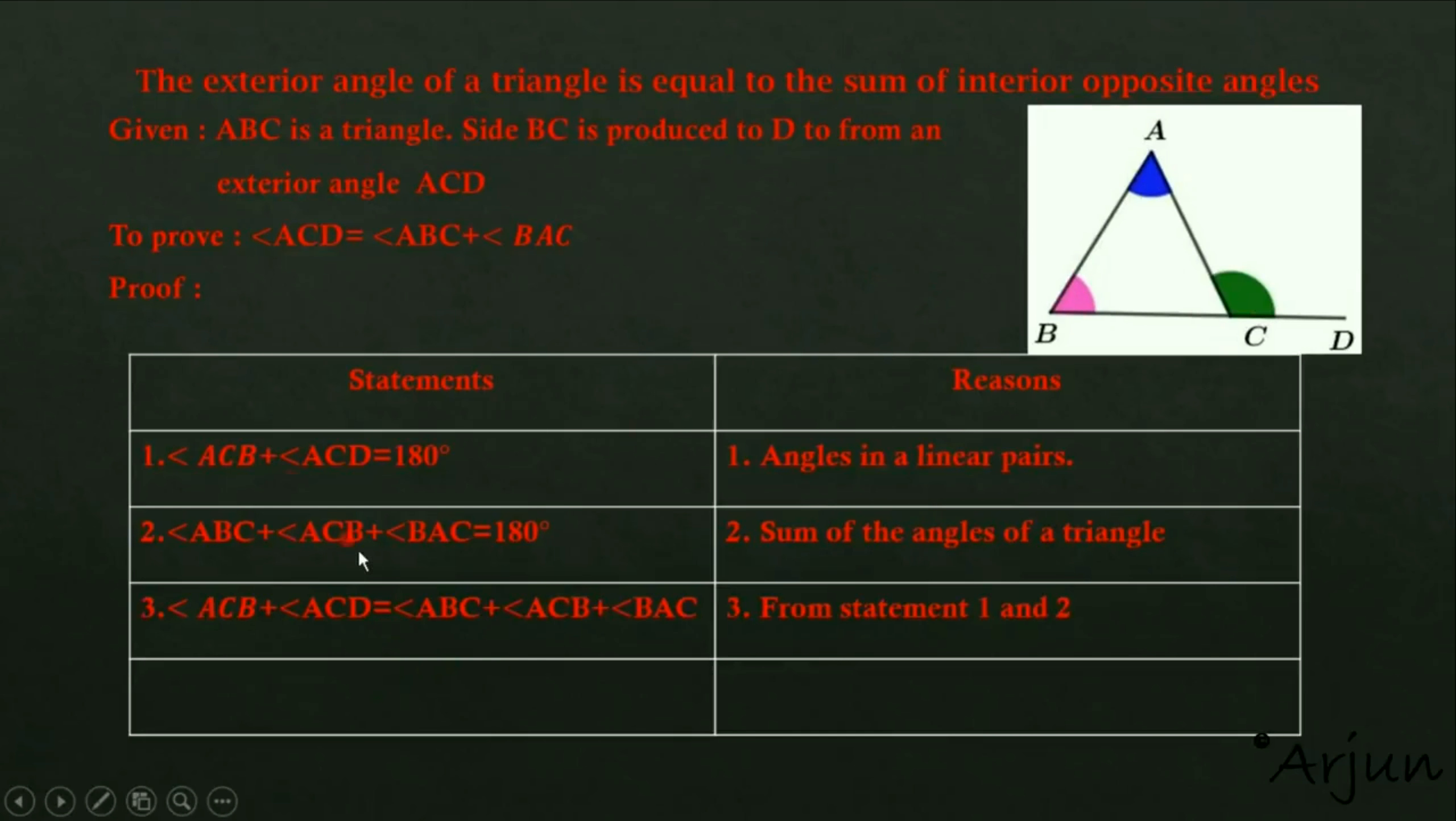Look here. First, angle ACB plus ACD equals 180 degrees. And angle ABC plus ACB plus BAC equals 180 degrees. Therefore, angle ACB plus angle ACD equals angle ABC plus angle ACB plus angle BAC. The reason is from statement one and two.